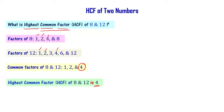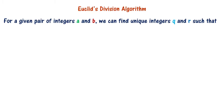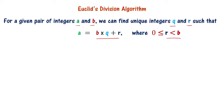You understood what is highest common factor. Now the question is, how can we make use of Euclid's division algorithm to find HCF? For a given pair of integers a and b, we can find unique integers q and r such that a equals b times q plus r, where r is less than b and r is greater than or equal to 0.